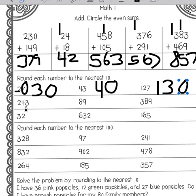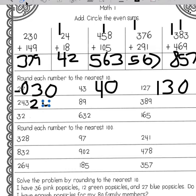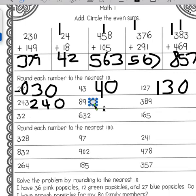Two hundred forty-three: the four is in the tens place, the three is less than five, the two stays the same, the four stays the same, and the three becomes a zero. Eighty-nine: the eight is in the tens place, we have a nine to the right of the rounding digit which is greater than five, so the eight will become a nine and this will become a zero.